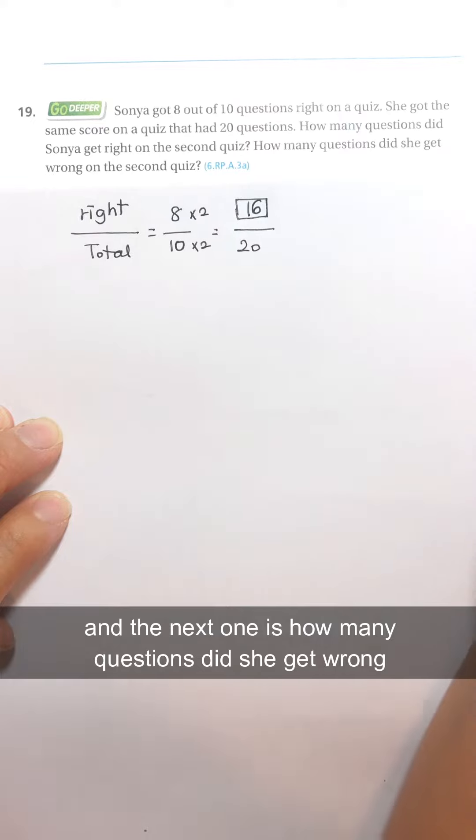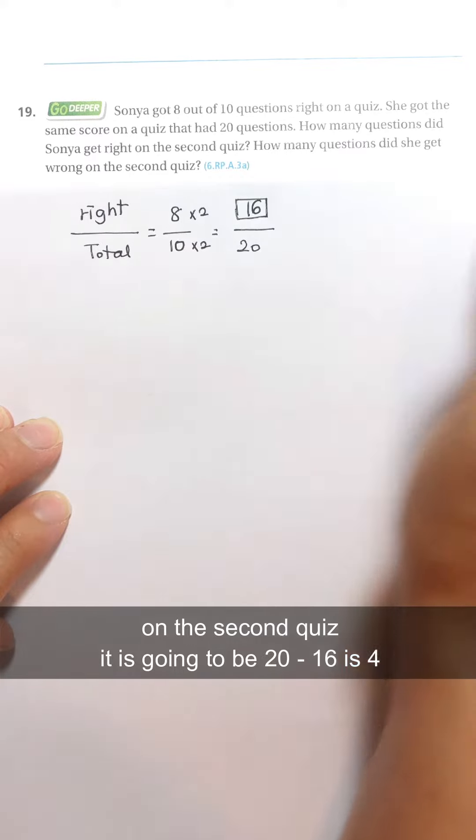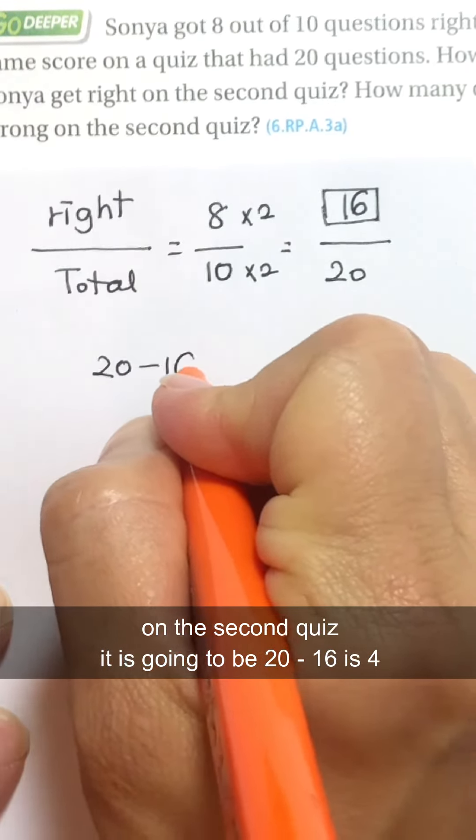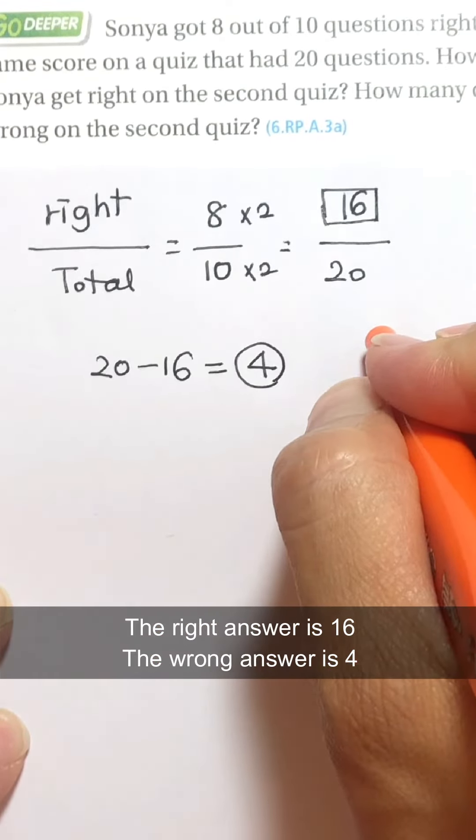And next one is, how many questions did she get wrong on the second quiz? It is going to be 20 minus 16 is 4. So right answer is 16, and wrong answer is 4.